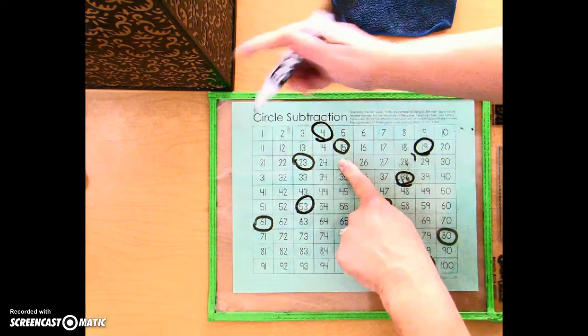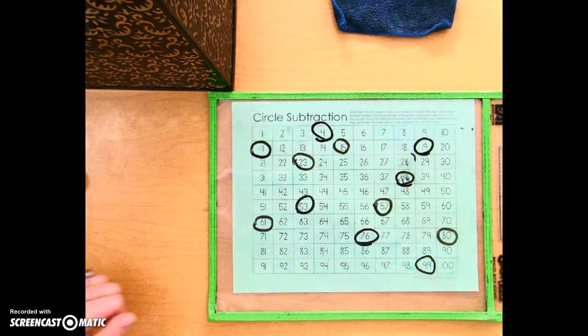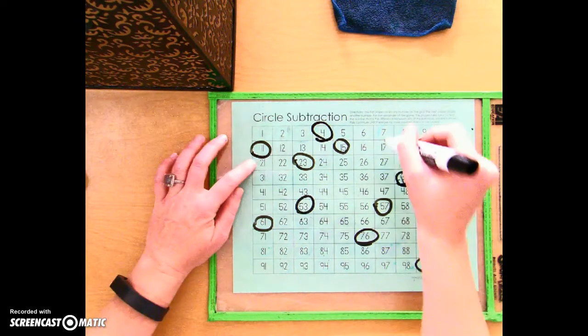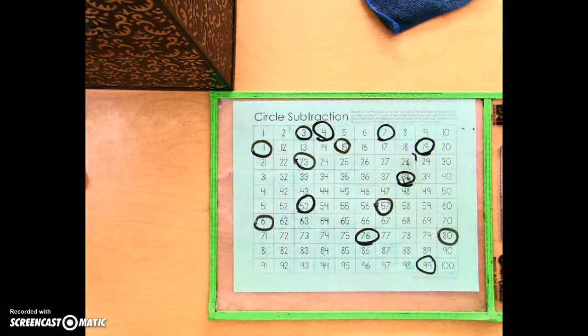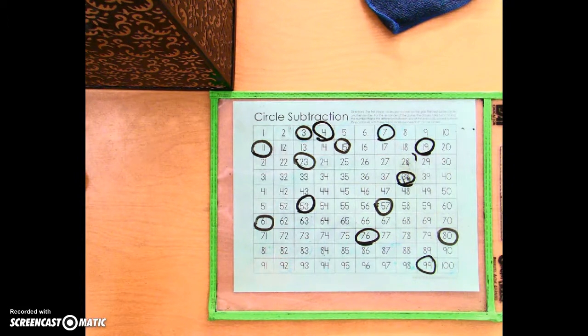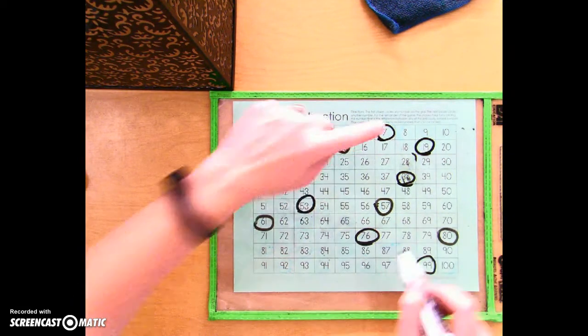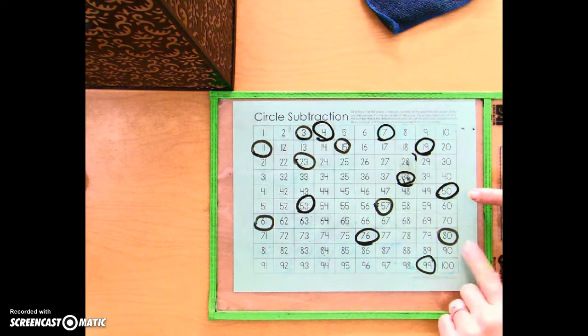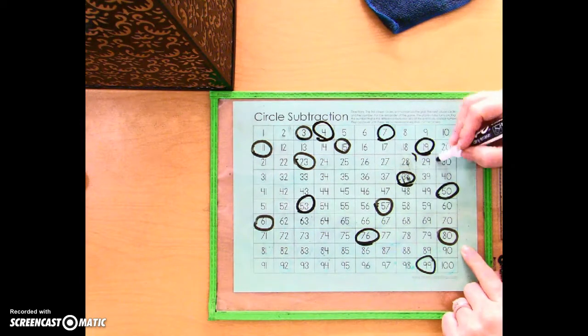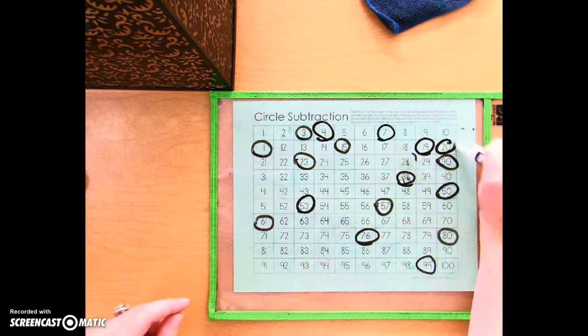15 minus 4 is 11. 11 minus 4 is 7. 7 minus 4 is 3. 57 minus 7 is 50. 80 minus 50 is 30. 50 minus 30 is 20.